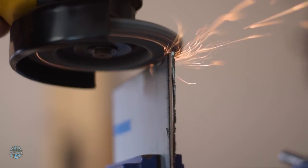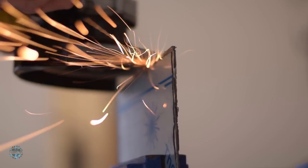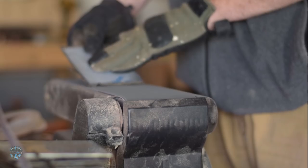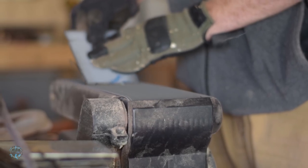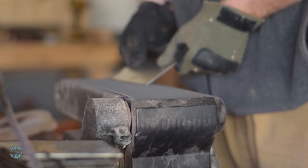Next, I cleaned up anything out of square with a flap disc in my angle grinder. After that, I cleaned up any rough patches in the belt grinder.